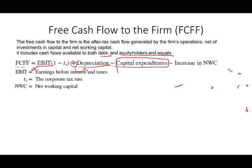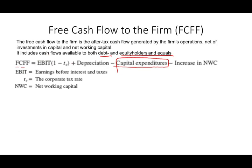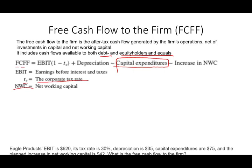EBIT is earnings before interest and taxes. Why do we take EBIT before interest and taxes and then multiply by one minus the tax rate? When we compute EBIT, we have non-cash expenses like depreciation embedded in that number. Those non-cash expenses give us a tax break — they reduce our tax bill. After reducing our tax bill, we add back those non-cash expenses. TC is the corporate tax rate and NWC is net working capital, which is current assets minus current liabilities.